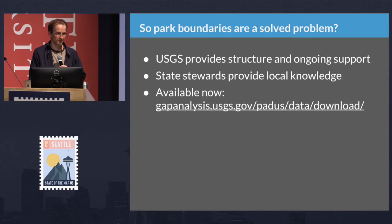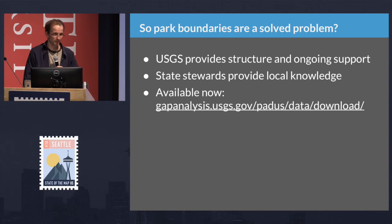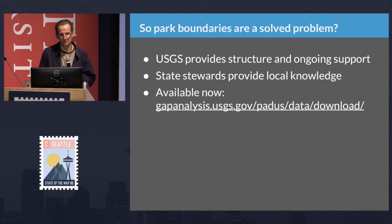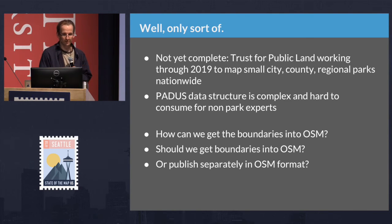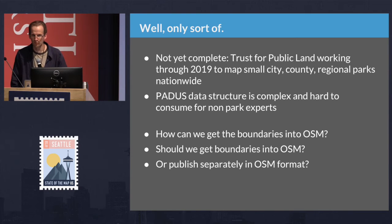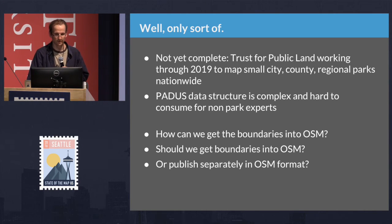The data structure is really complicated. If you download it you'll get either a GDB or tons and tons of shapefiles with 14 different flavors that either do or don't include easements and marine protected areas. It's not simple and not easy. I've been asking myself: can we get the boundaries into OSM, should we get the boundaries into OSM, should we publish them separately in OSM format or some other format? I'd be super open to feedback on what's possible, feasible, and desirable.